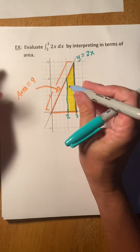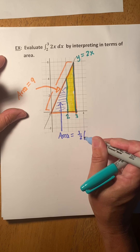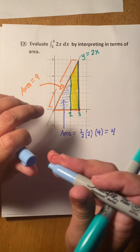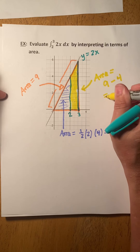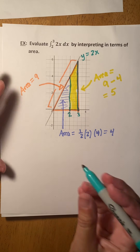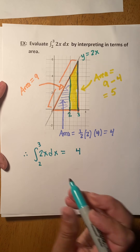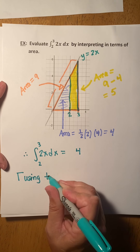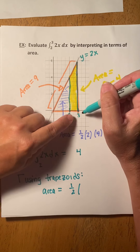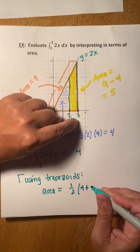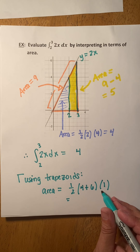But we don't need that full area, so we can pull out the smaller triangle. This smaller purple area would be one-half times 2 times 4, which is 4. So the yellow area — what we want — would be the total area 9 minus the smaller piece 4, which is 5. So the integral from 2 to 3 of 2x dx is 5. Using the trapezoid formula: the area is one-half times the sum of the heights (4 and 6) times the base (1), giving one-half times 10 times 1, which is also 5.